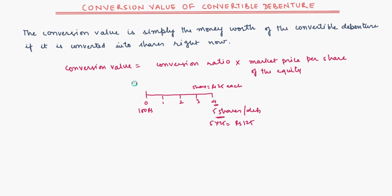But the conversion value is not just restricted to the value at the end of the tenure. Let's say at the point where you have spent 1.5 years with the debenture, the share price is rupees 21. At that point, the conversion value will be equal to 5 into 21, which equals 105 rupees. So this is the conversion value.